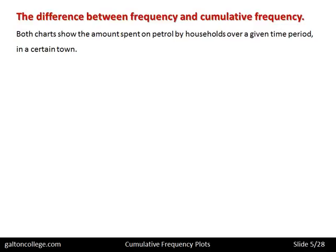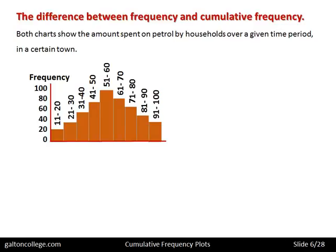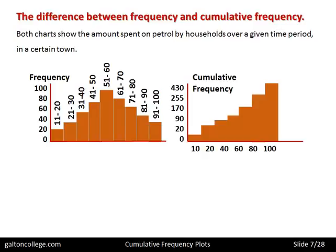Now the difference between frequency and cumulative frequency. Both charts show the amount spent on petrol by households over a given time period in a certain town. The frequency distribution on the left has a vertical axis ranging from 0 to 100. The cumulative frequency distribution on the right is more step-wise. The left chart is more symmetrical with a high modal value, while the right is stepped.